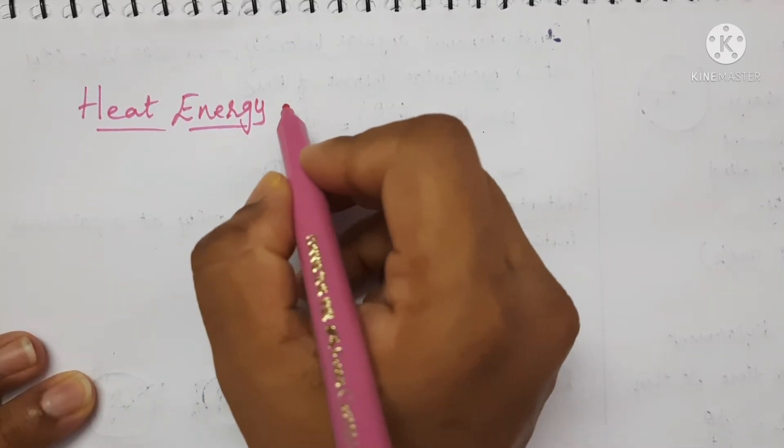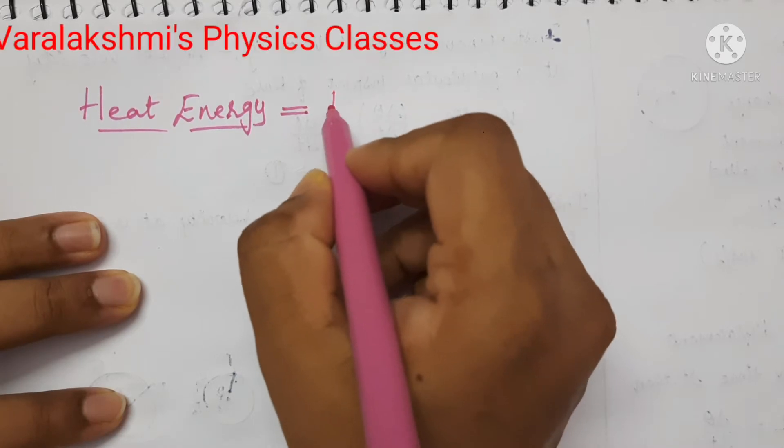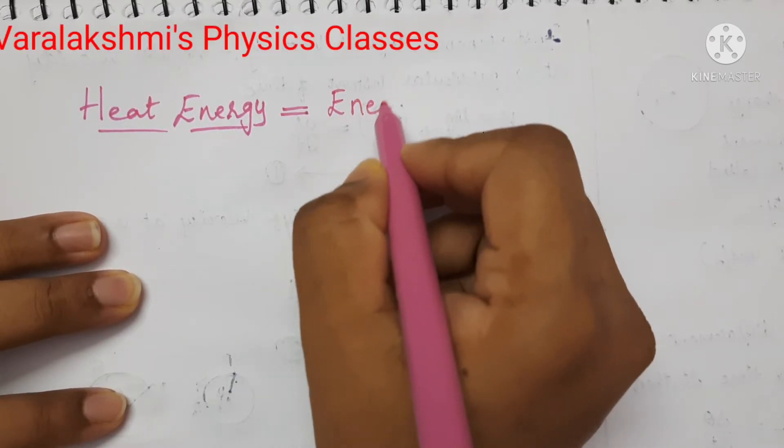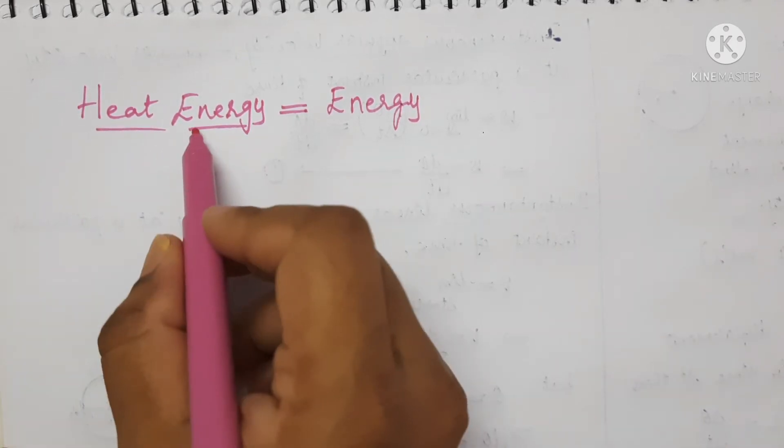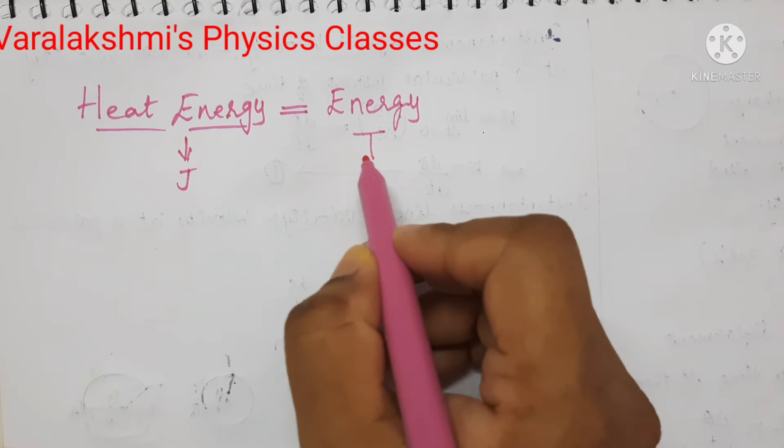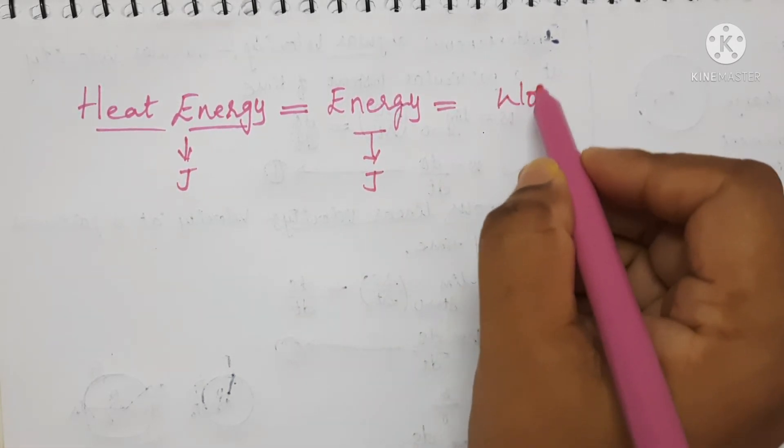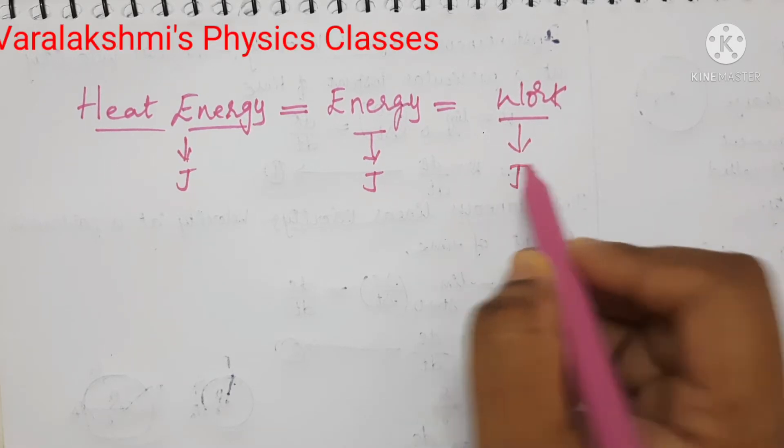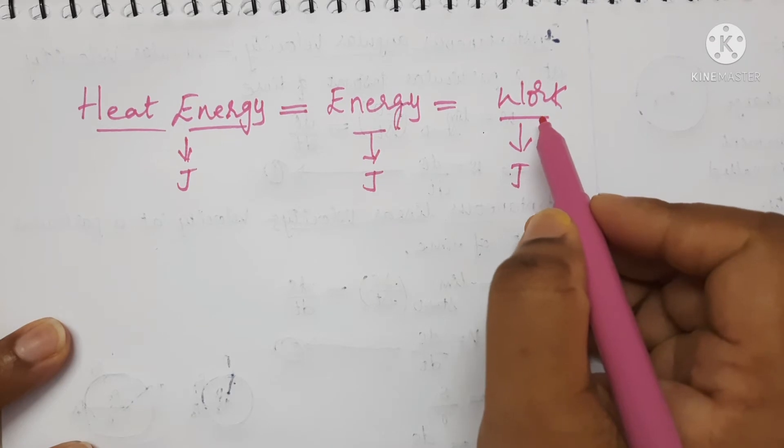Let us see the dimensions of heat energy. As we all know that heat is a form of energy, so I am replacing with energy. And other reason is heat energy SI unit is joule and energy also have the SI unit joule and also work done also have the SI unit joule, so we can replace with energy or work done.